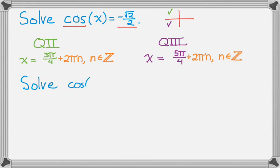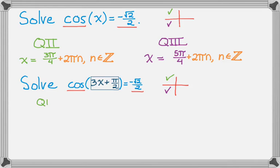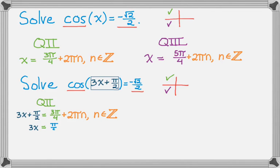Let's solve cosine of (3x + pi/2) equals negative radical 2 over 2. Same idea — it can come from quadrants 2 and 3. In quadrant 2, 3x plus pi over 2 equals 3 pi over 4 plus 2 pi n. Subtracting pi over 2 from both sides, 3 pi over 4 minus pi over 2 is pi over 4. So 3x equals pi over 4 plus 2 pi n. Dividing everything by 3, x equals pi over 12 plus 2 pi n over 3.